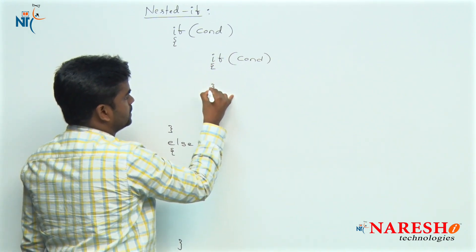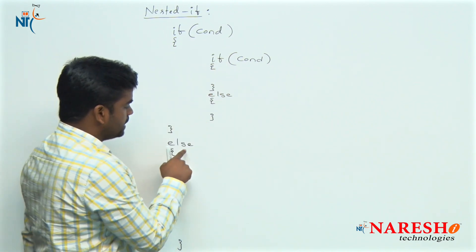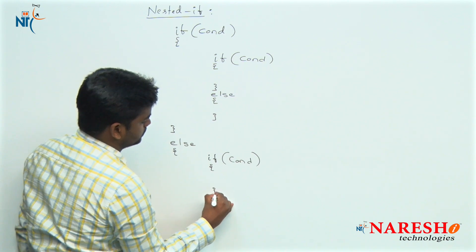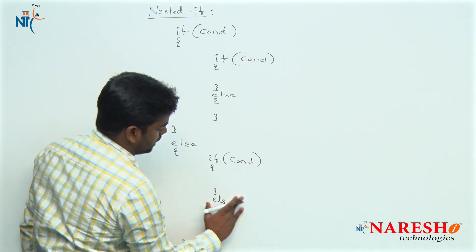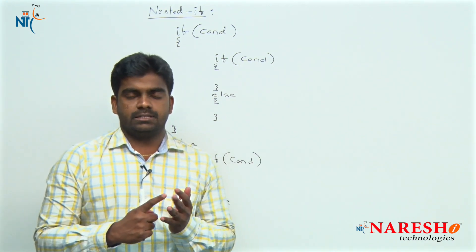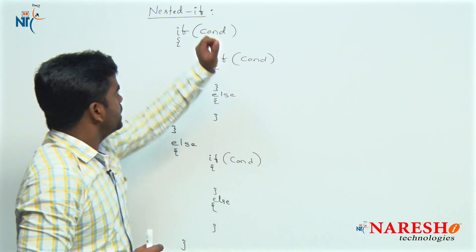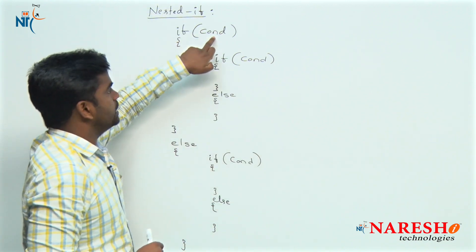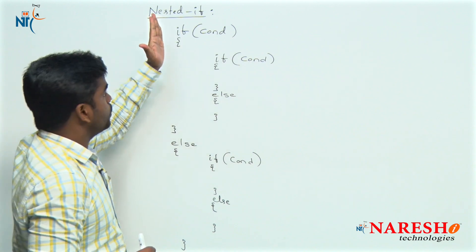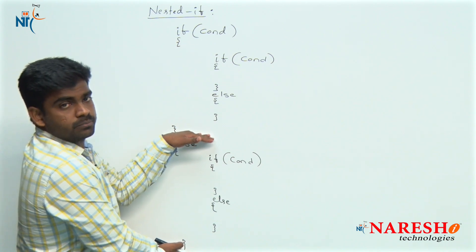Inside the inner if block there is a condition and a corresponding else block. In the outer else block, if the program requirement is there, we write another if with a condition and else block. We know that among if block and else block only one block executes — if condition is true, the if block executes; if condition is false, the else block executes. Execution starts by checking the outer condition.